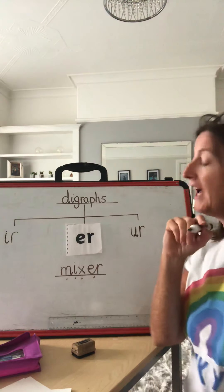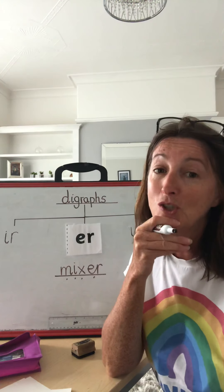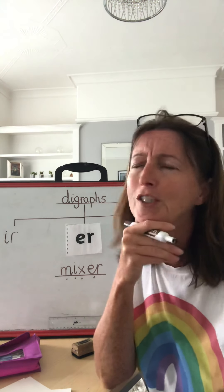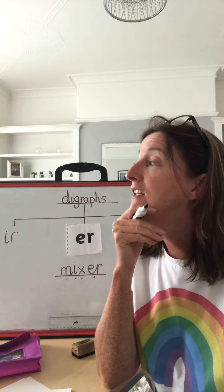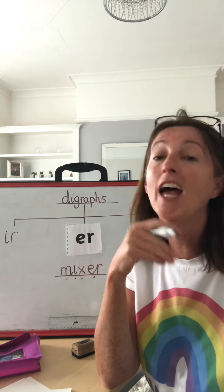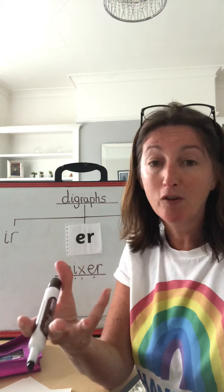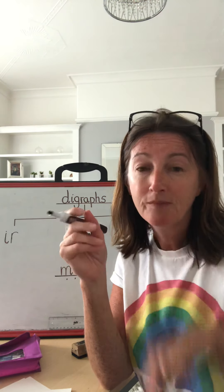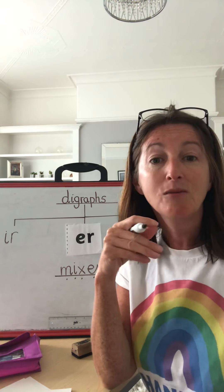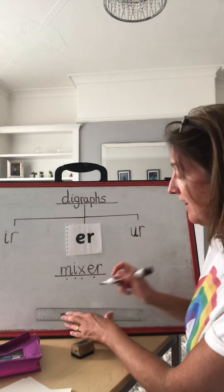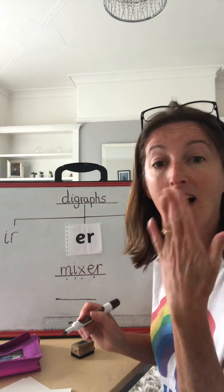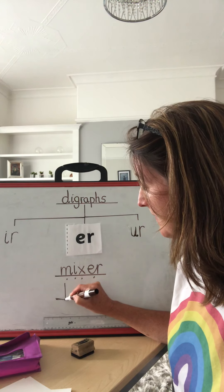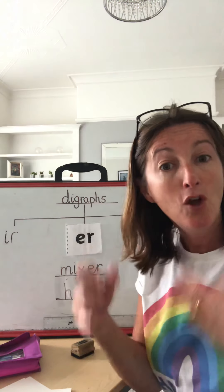Now another word that has UR — it's one of the words we use quite a lot in our sentences. It's 'her.' Is that her coat? Her — because we're referring to a girl. Her. And it's got two sounds. Two sounds — what's the first sound? H, H, H. What's the first sound? Her. So the first sound is H, and then the second sound is the digraph UR.